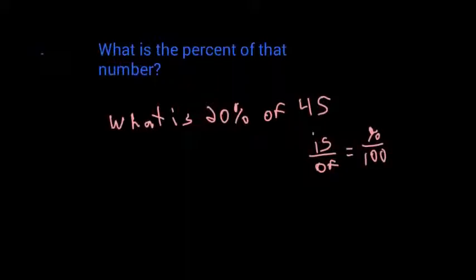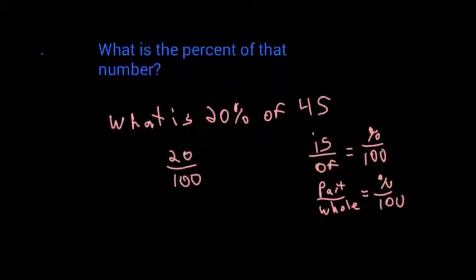100. You'll also see it as part over whole equals percent over 100, but is over of are the words you're gonna see more often. So if we put these into that proportion, I have 20%, so that's gonna go over 100. Of 45, so 45 is gonna go on bottom.